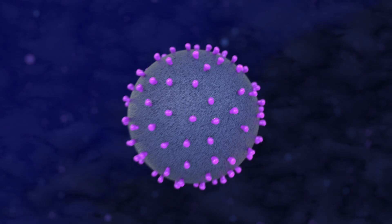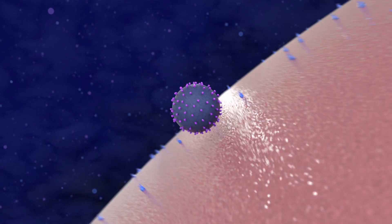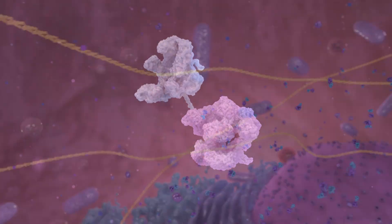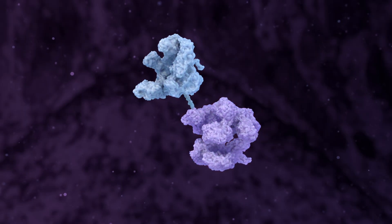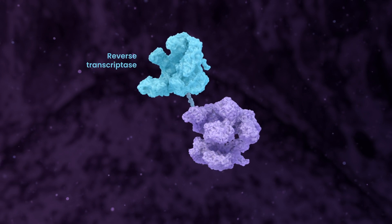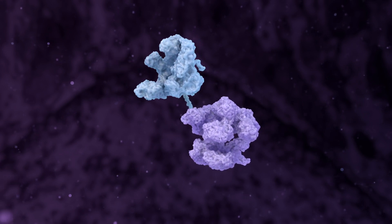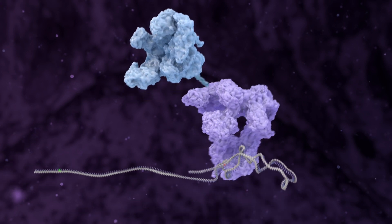The lipid nanoparticles deliver gene editing components to the inside of the cell. Once inside the cell, a prime editor protein composed of a cas enzyme domain and a reverse transcriptase (RT) domain binds to a prime editing guide RNA, or PEG RNA.